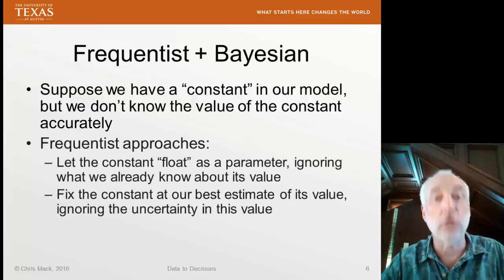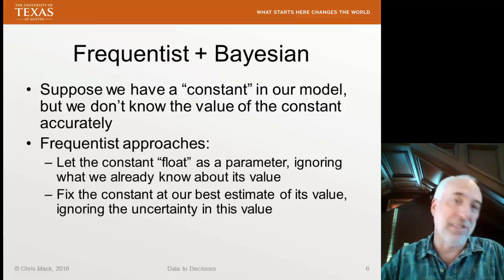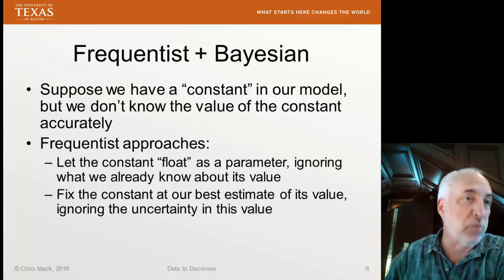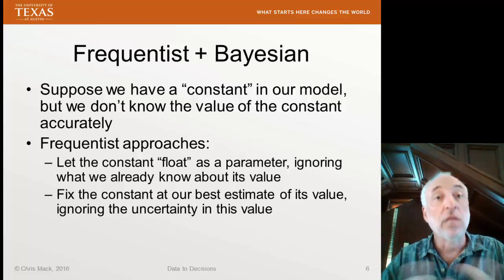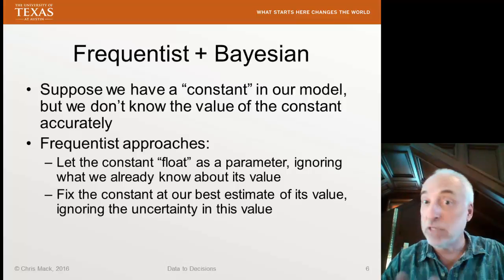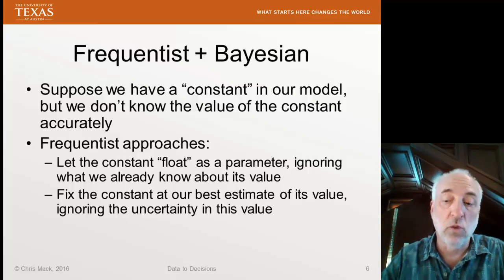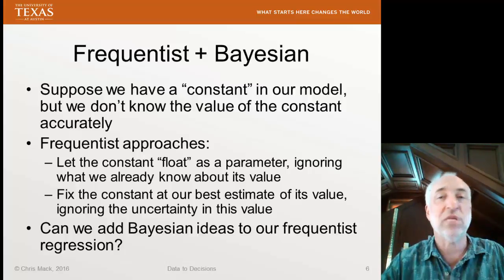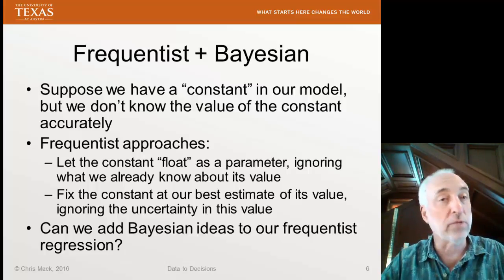So what do we do? In the frequentist worldview, we really have two choices. One is to treat the constant as a parameter of the model and let it float — including it in our fitting and ignoring any prior tabulated or measured value. The alternative is to say that number is exactly accurate, fix it to our best estimate, and not allow it to vary — but that ignores the uncertainty in the value. What we'd like is a Bayesian approach: we have a prior understanding of what this parameter is, but we know there's some uncertainty. Can we add this Bayesian idea of a prior distribution to our frequentist regression?